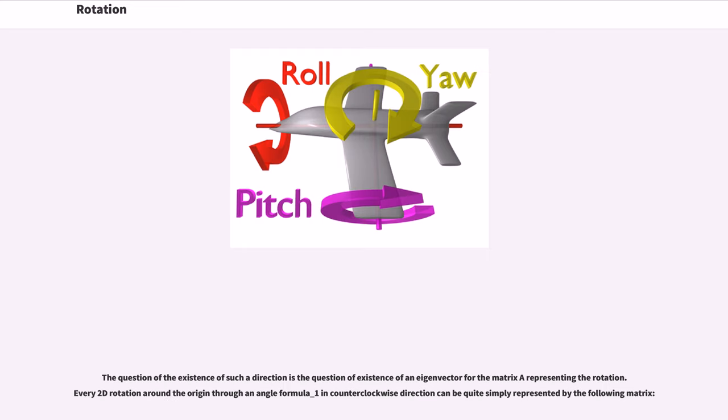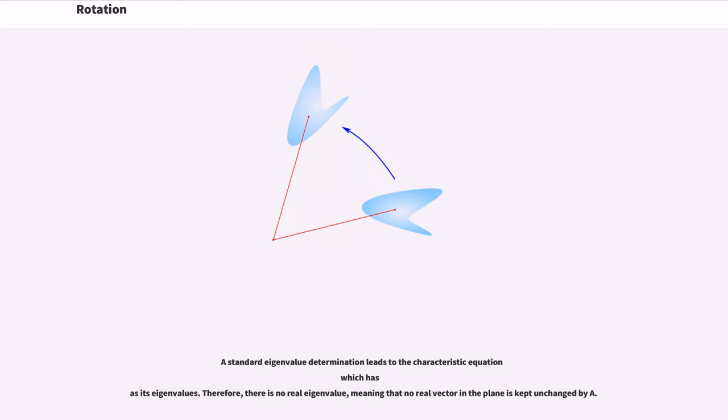The question of the existence of such a direction is the question of existence of an eigenvector for the matrix A representing the rotation. Every 2D rotation around the origin through an angle in counterclockwise direction can be quite simply represented by the following matrix. A standard eigenvalue determination leads to the characteristic equation which has as its eigenvalues. Therefore, there is no real eigenvalue, meaning that no real vector in the plane is kept unchanged by A.